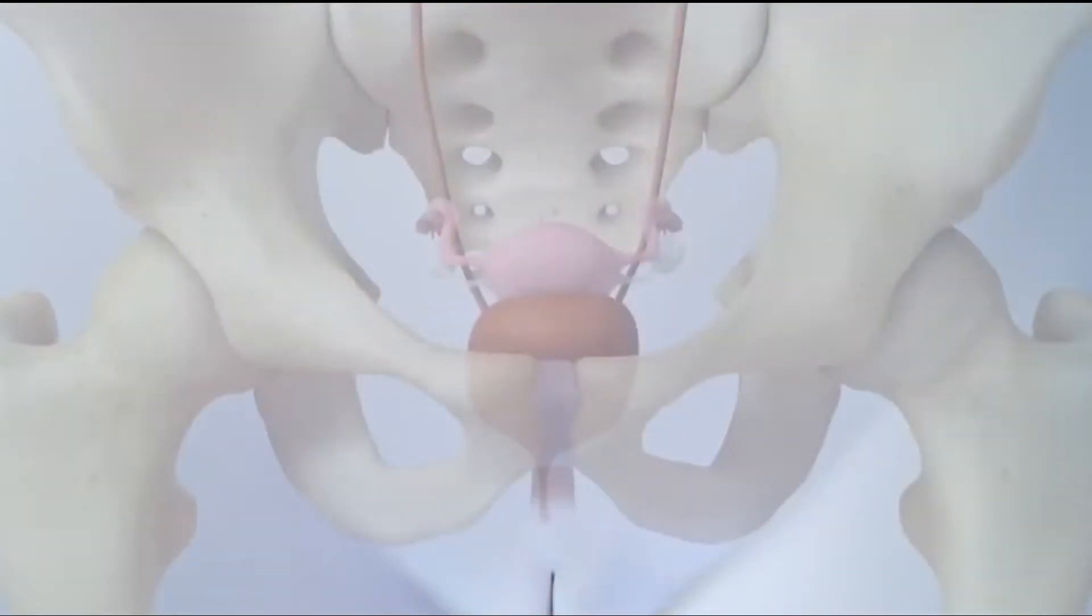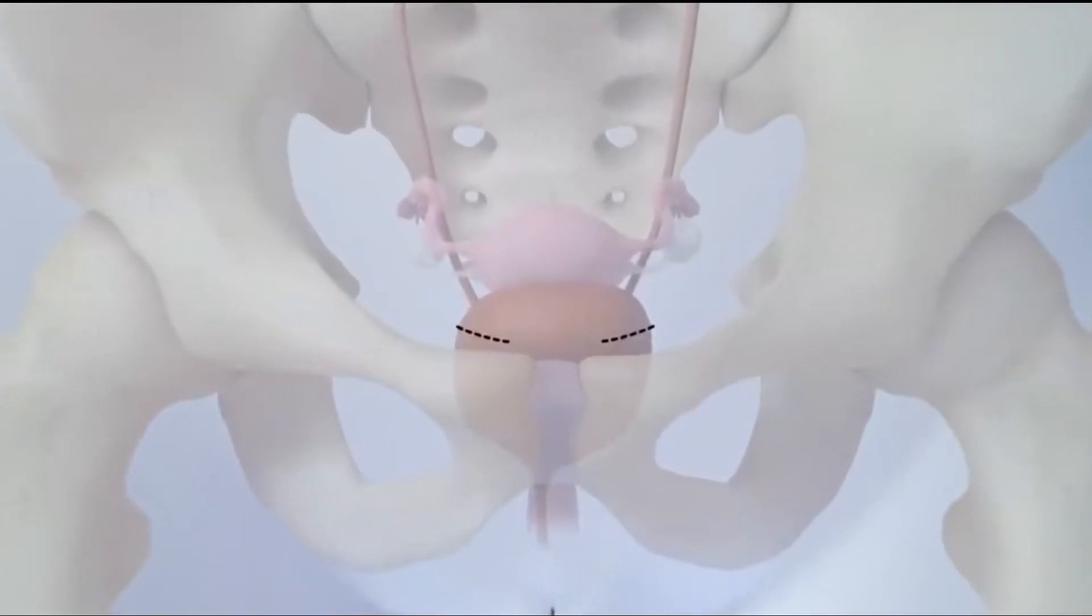To start the procedure, the surgeon will make two small incisions in your abdomen just above your pubic bone. Another small incision will be made in your vagina.